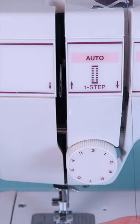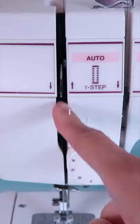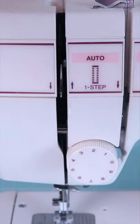Once you get to this point, be sure that you place the thread in between the disc behind this knob. Be sure that the thread take up lever is in the up position.